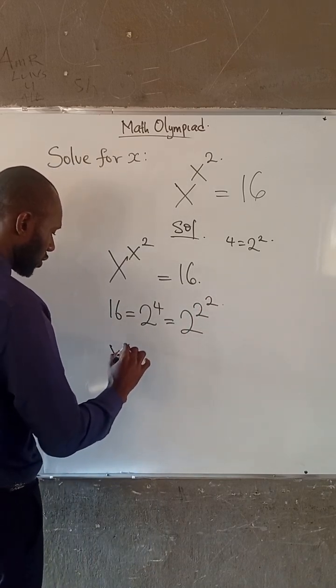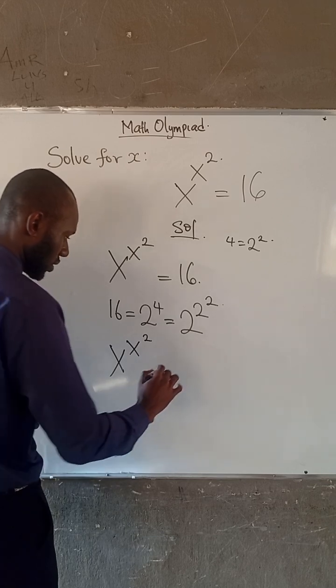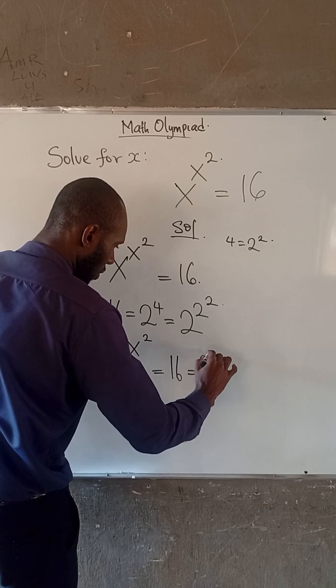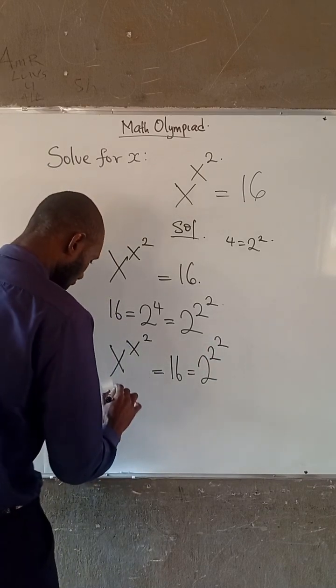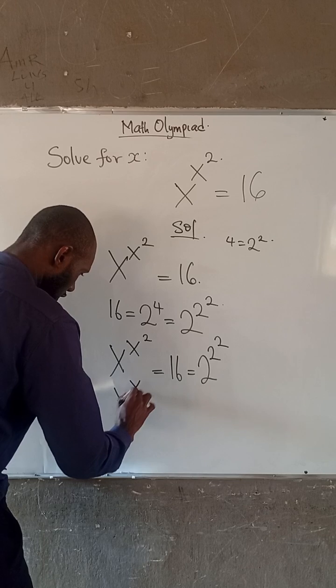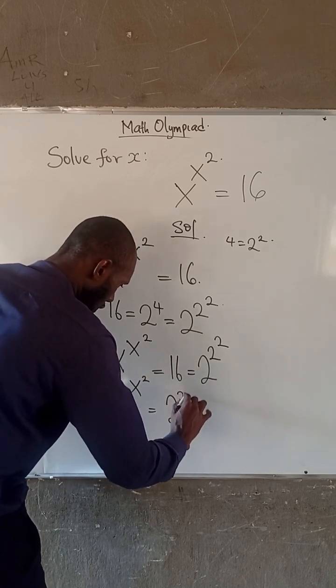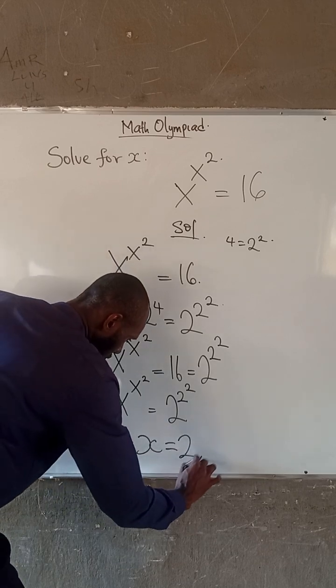Therefore, x to the power of x to the power of 2 equals 16, which equals 2 to the power of 2 to the power of 2. So x to the power of x to the power of 2 equals 2 to the power of 2 to the power of 2. Therefore, x is equal to 2.